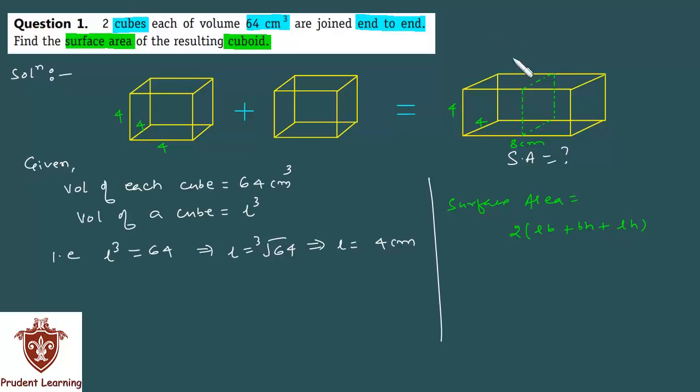Now, dimensions aapke paas kya kya hai, jo cuboid hai, uska length aapke paas hai 8 cm, mein unit nahin likh raho, breadth aapke paas hai 4, aur height bhi aapke paas hai 4. So, substituting the values we have, twice of L aapke paas hai 8 into breadth is 4, plus breadth aapke paas hai 4 into height is 4, plus length aapke paas hai 8 into height is 4.